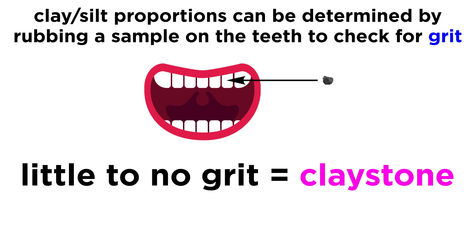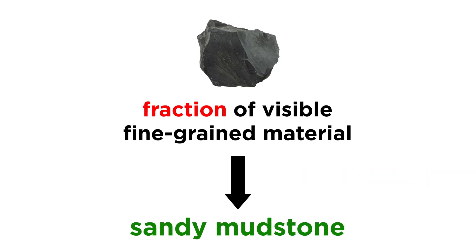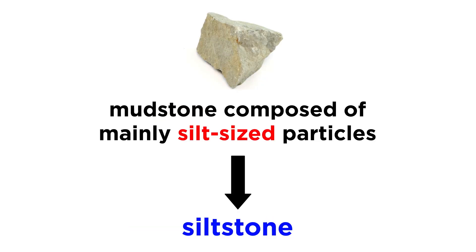Mud can be easily distinguished from sand based on whether grains are visible to the naked eye, since anything smaller than fine sand is too small to be seen. So if we have a sedimentary rock without visible grains, it would be classified as a mudstone. Furthermore, the relative proportions of clay to silt can be determined by rubbing a small sample over your teeth to determine the amount of grit present. If little to no grit is detected, it is probably nearly pure clay and would be classified in the field as a claystone. If moderate grit is present, that will suffice to classify it as a general mudstone. If a mudstone contains a fraction of visible fine-grained material, it would be classified as sandy mudstone. Siltstone is a more specific type of mudstone, being mainly composed of silt-sized particles.